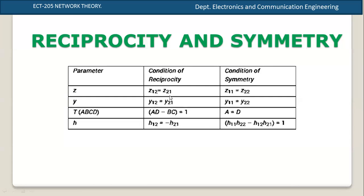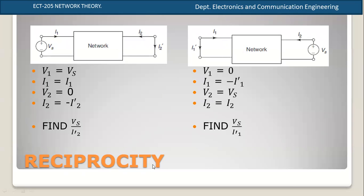Now you can do the proof for the reciprocity condition. The reciprocity condition states that the voltage-to-current ratio is the same when both voltage and current are interchanged. Vs divided by I2-dash is the same. If Vs is at the secondary, the ratio Vs by I2-dash remains the same — all these conditions will satisfy the reciprocity conditions.